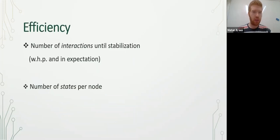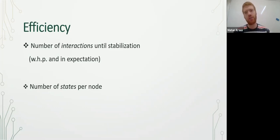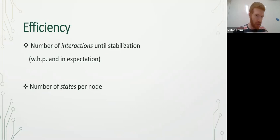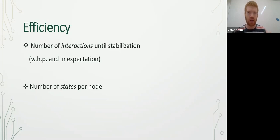Efficiency in population protocol is measured by the number of interactions until stabilization, which is an interaction where the configuration is that all the nodes agree on the initial majority color. Moreover, they cannot reach a configuration which is wrong, meaning not all the nodes agree on the initial majority color. This can only be bounded with high probability and expectation, of course, since the rounds are chosen at random.